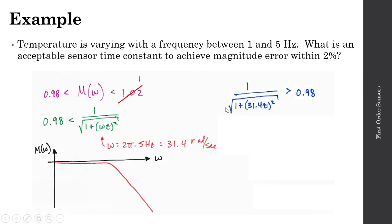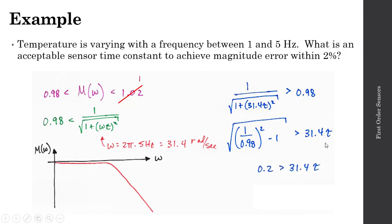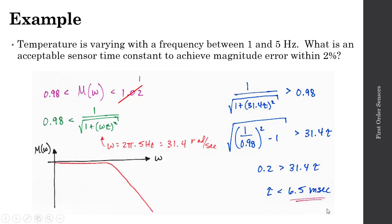Plugging in 5 Hz, the radial frequency omega equals 2 pi times 5, which is 31.4 radians per second. So we have 1 over the square root of 1 plus the quantity 31.4 tau squared, greater than 0.98. Rearranging, we find that 0.2 must be greater than 31.4 tau, meaning the time constant of the temperature sensor must be less than 6.5 milliseconds. This 2% error requirement is what drives this time constant. Relaxing the error to 5% or 10% would allow a larger, slower time constant.